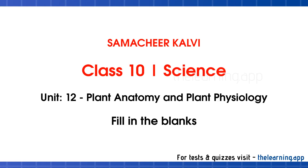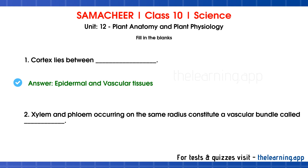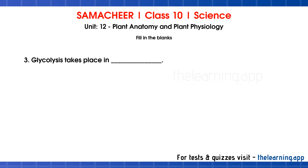Next, fill in the blanks. First question: Cortex lies between dash — epidermal and vascular tissues. Second question: Xylem and phloem occurring on the same radius constitute a vascular bundle called dash — conjoint. Third question: Glycolysis takes place in dash — cytoplasm.